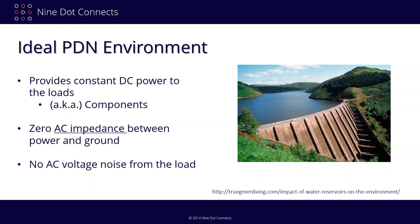The second ideal condition is zero AC impedance between power and ground — meaning no noise on the planes. We want a flat DC voltage, and anything going above or below that is AC noise we want eliminated. The third ideal is no AC noise voltage from the loads themselves — loads should take what they need without disturbing the power distribution network.